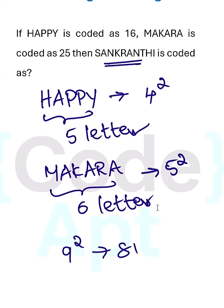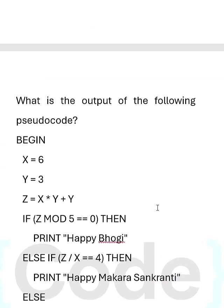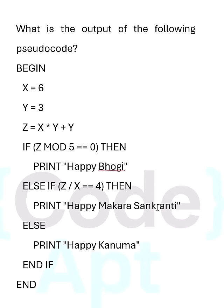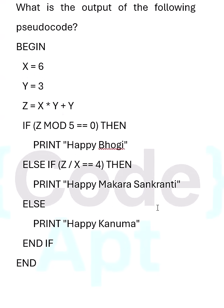Now let us see a couple of questions related to pseudo codes. Here initially X is assigned as 6, Y is 3. We always have to apply BODMAS — whenever multiple operations are available, don't go for 3 plus 3 then multiply by 6. First do multiplication then addition. We get 21.